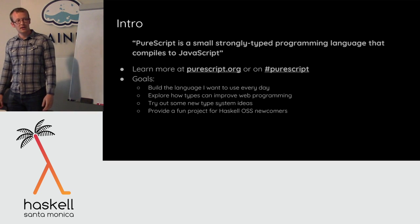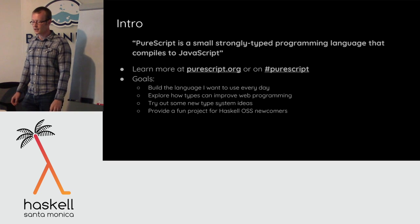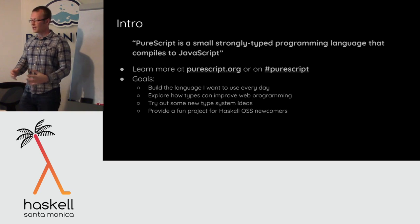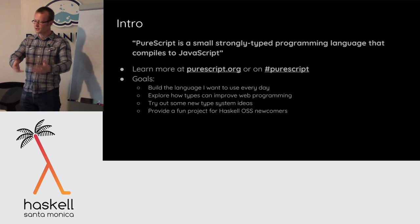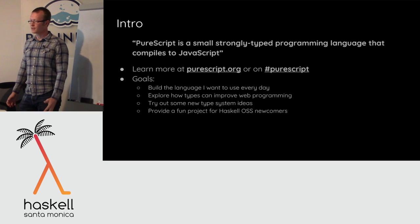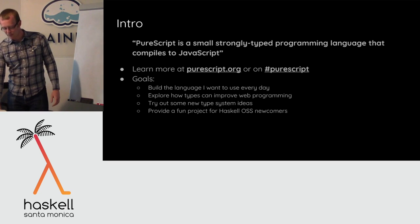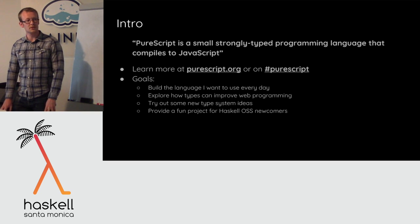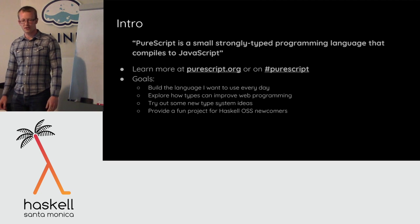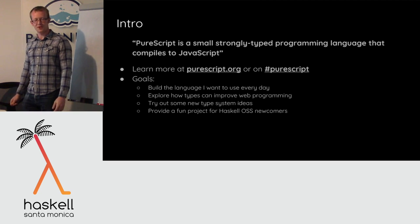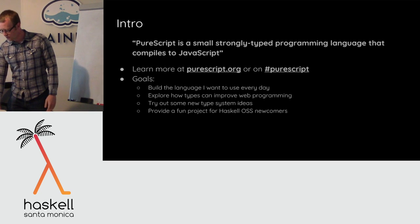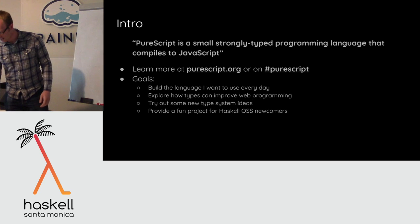One goal was to explore how types can improve web programming and try out new type system ideas. One of the stated goals of GHC is to be a playground for new type system ideas — I want to do a similar thing for PureScript. Also, just to have a fun project for people new to open source Haskell. If you're interested in joining the PureScript community, there are interesting small tasks on the compiler. You basically just need to know how to build a project with Stack.